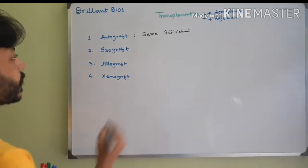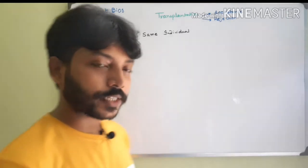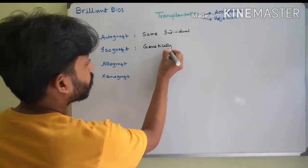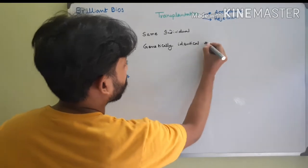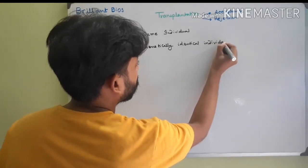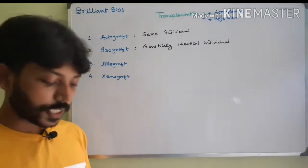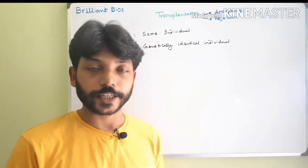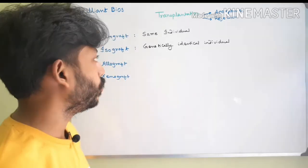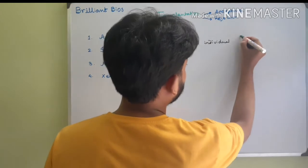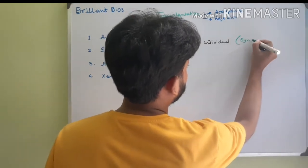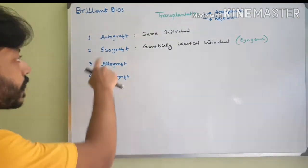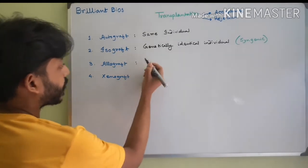The next is isograft, which means donation of organ or tissue between genetically identical individuals. This genetically identical individual can be an inbred strain of mice or identical twins in the case of humans or other animals. These genetically identical individuals are also known as syngenic.